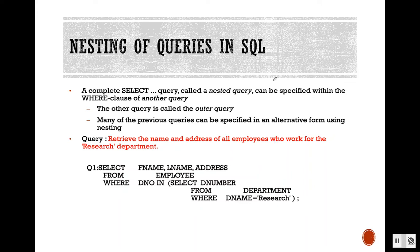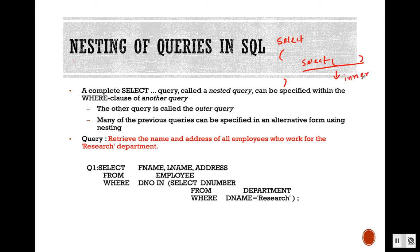In this segment we are going to see nested SQL. A nested SQL means we can write a SELECT query inside of another SELECT query. The SELECT statement inside the SELECT statement is known as an inner query in SQL, and the main SELECT statement is known as outer SQL.